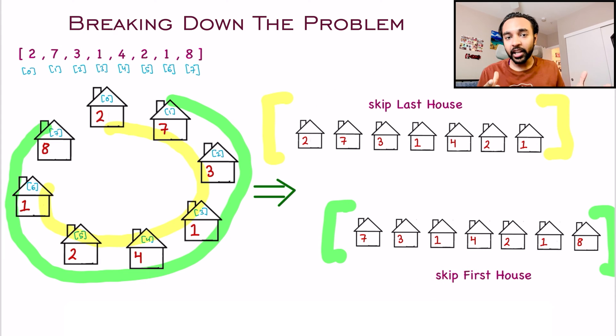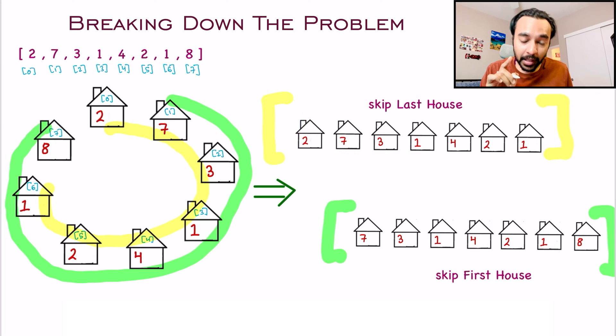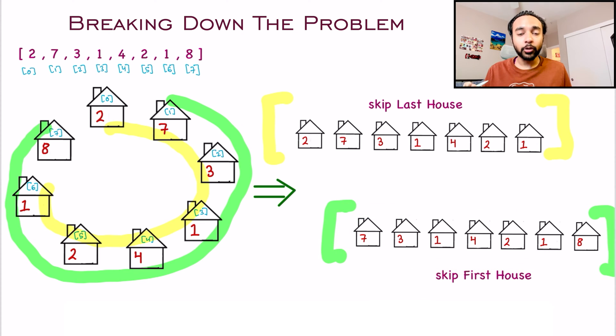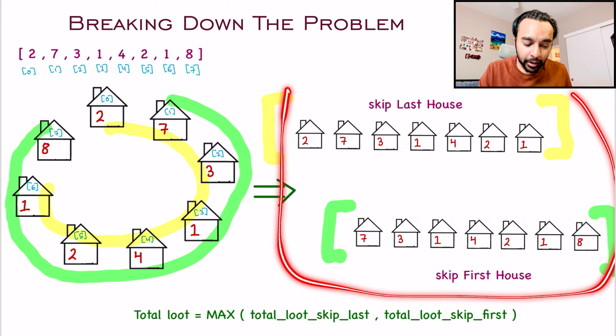And you have to maximize your loot. So once again, what I am just going to do is, I will determine the maximum loot I can have by skipping the last house and I will determine the maximum loot I can have by skipping the first house. These are the two possibilities I have. Now, just choose the maximum loot you can achieve from any of these two cases. So your final answer would be the maximum of both of these values.